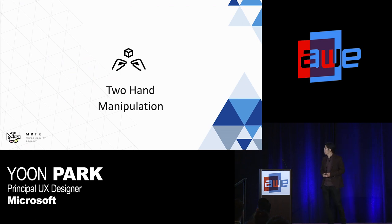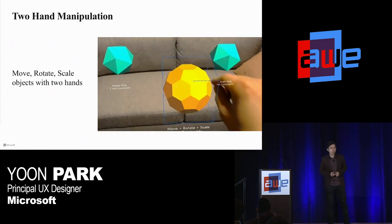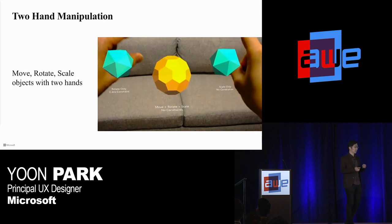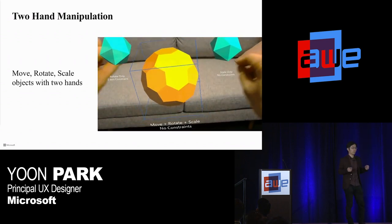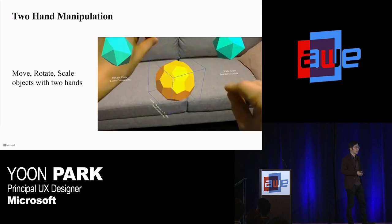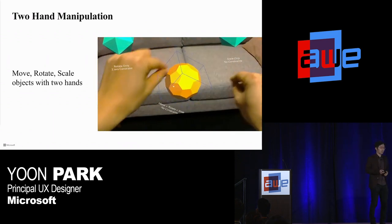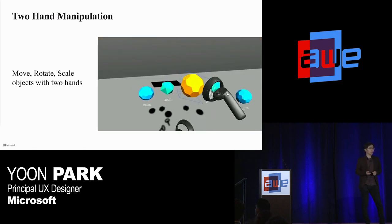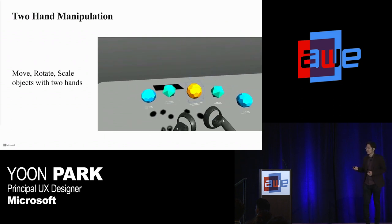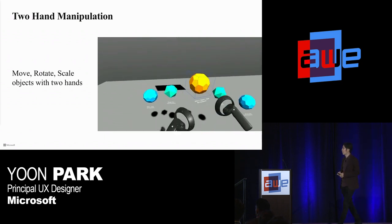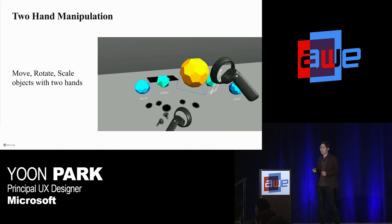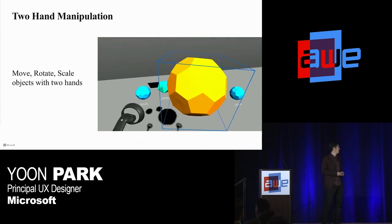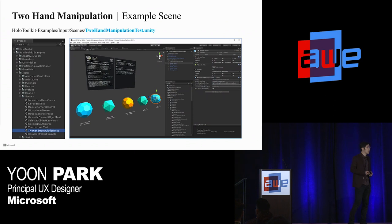Next, two-hand manipulation. The two-hand manipulable script allows you to interact with an object using both hands — you can move, rotate, and scale with this simple script. This is the interaction behavior introduced in RS4 for HoloLens as well as immersive headsets in ClipHouse. The script works both with hand gestures in HoloLens and with motion controllers in immersive headsets. You can find the example scene under examples, inputs, and scenes — it's named Two-Hand Manipulation Test Scene.